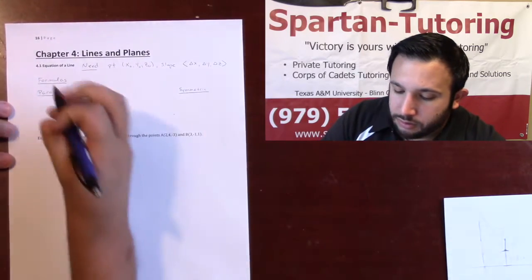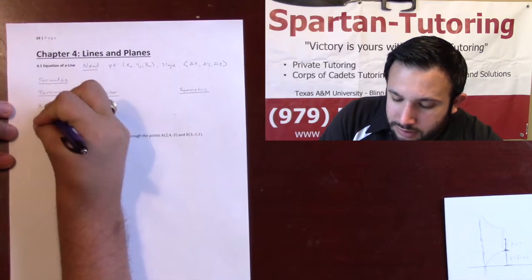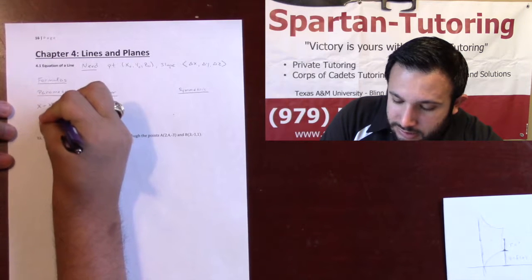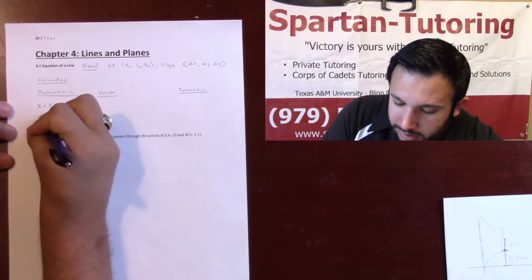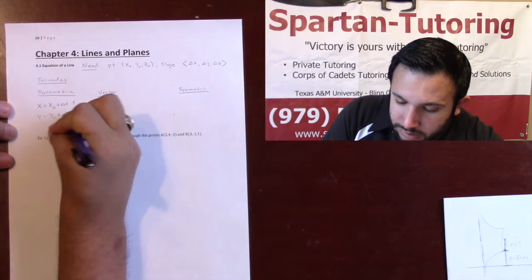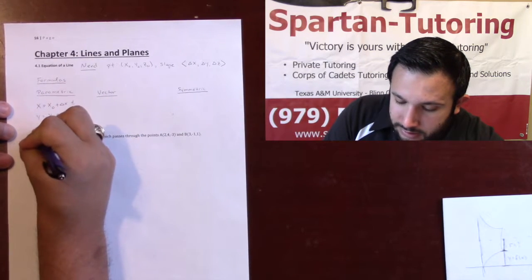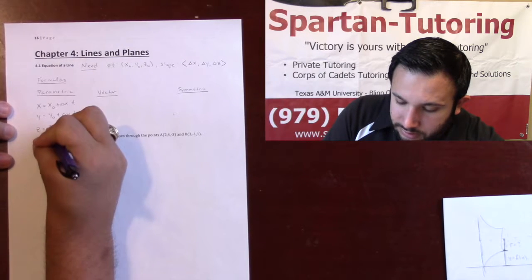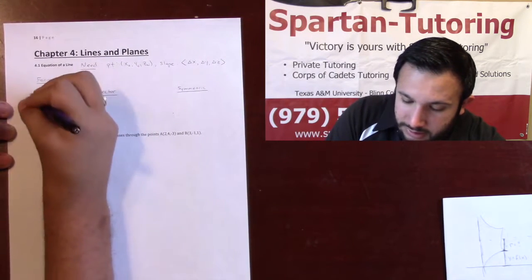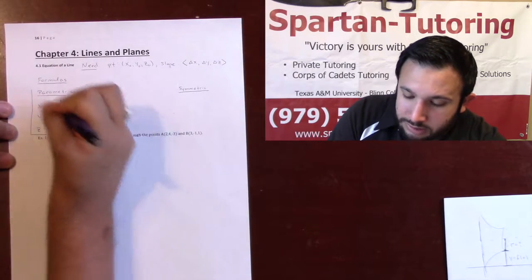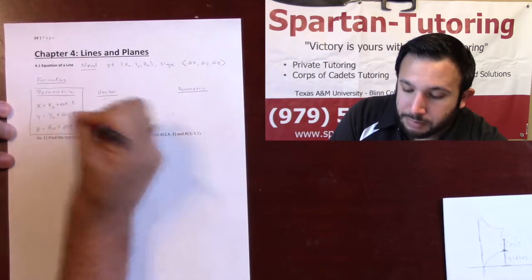Once you have these two things, the way you write it in parametric form is: x equals x-naught plus delta x times t, y equals y-naught plus delta y times t, and z equals z-naught plus delta z times t. This would be your final answer if they want it as a parametric equation.